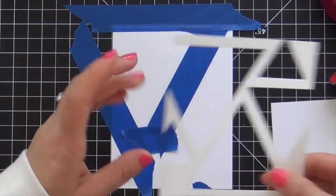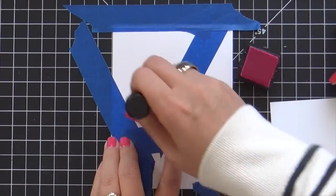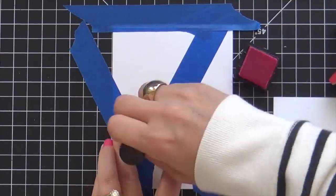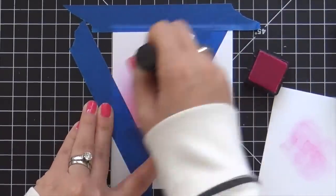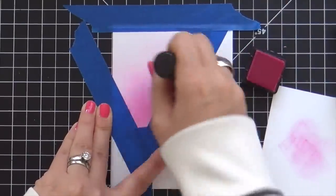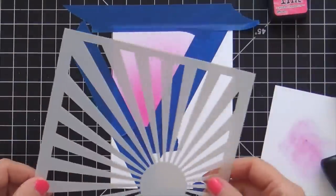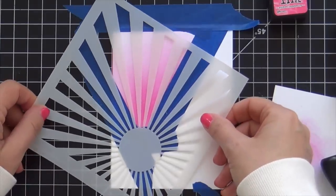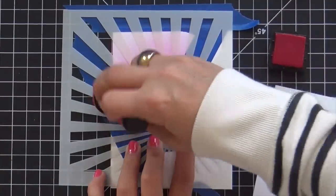I'm going to go in with some Picked Raspberry Distress Ink. I'm using my little Distress mini ink cubes, but you could do this with any inks that you have. First I'm going to give it a bit of a gradient ink blend, going from dark, fading it up to light.